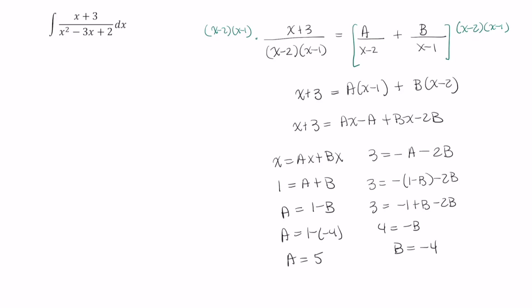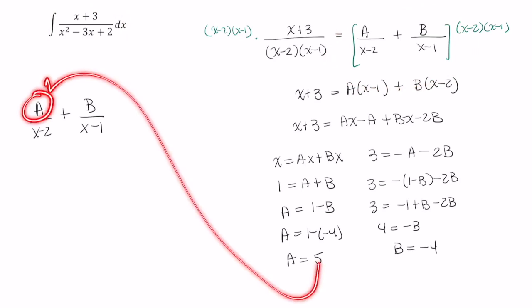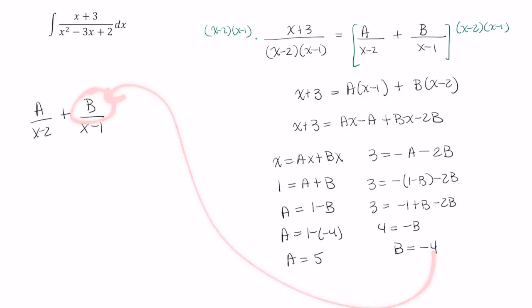So what have we just done here? We had a over x minus 2 plus b over x minus 1 was our first step in finding the partial fraction decomposition of this rational function. We found out that a is 5, so instead of writing an a here, I'm going to put a 5 here. And instead of putting a b here, I'm going to put a negative 4 here. So in short,